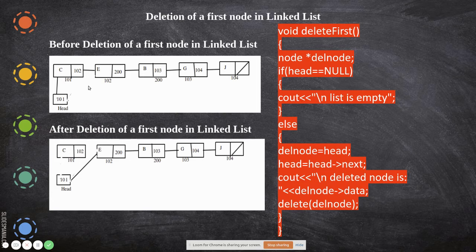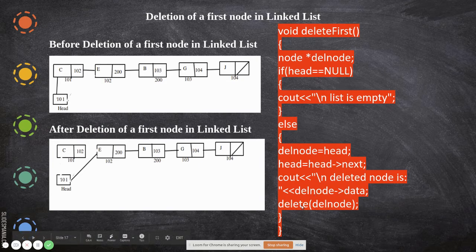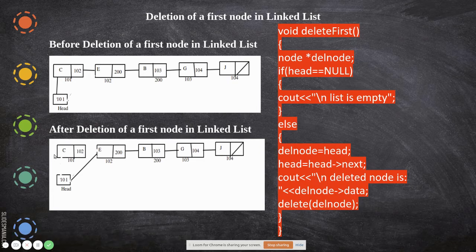Now you can print out what data you are deleting by printing del_node's data. Then you have to free the memory space occupied by that node, which is done by the free function — you pass del_node to it. After executing this statement, that node no longer exists and the memory it occupied is released.